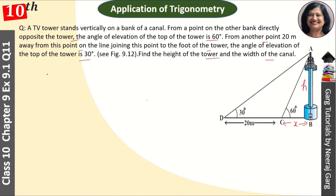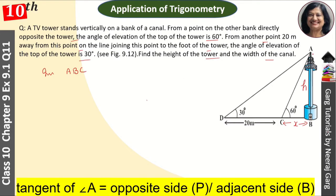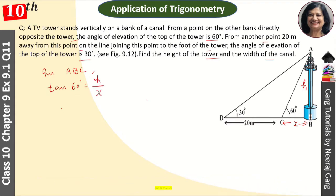So let's start in triangle ABC. Tan 60 degrees equals perpendicular upon base, H upon X. Tan 60 degrees value is √3, so H = √3X. We have our first equation.